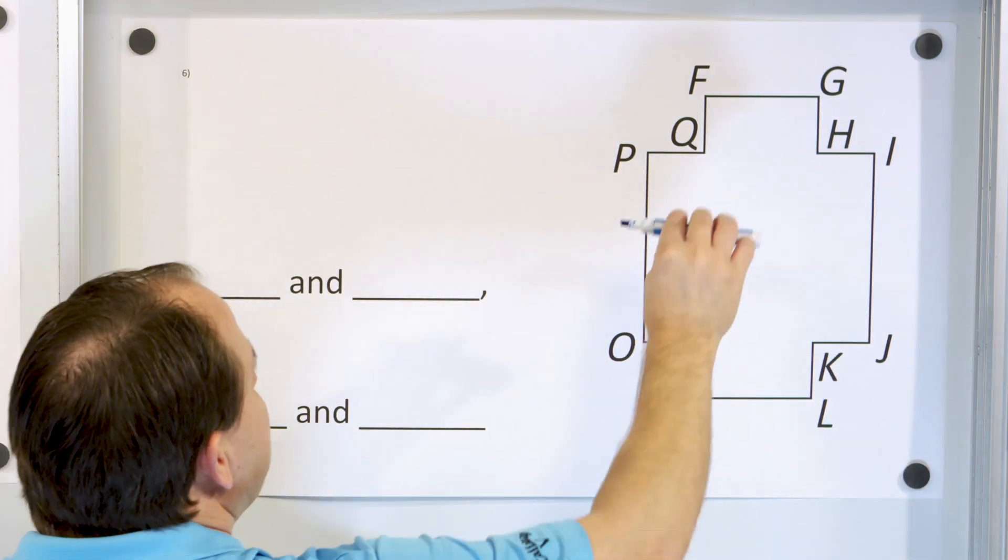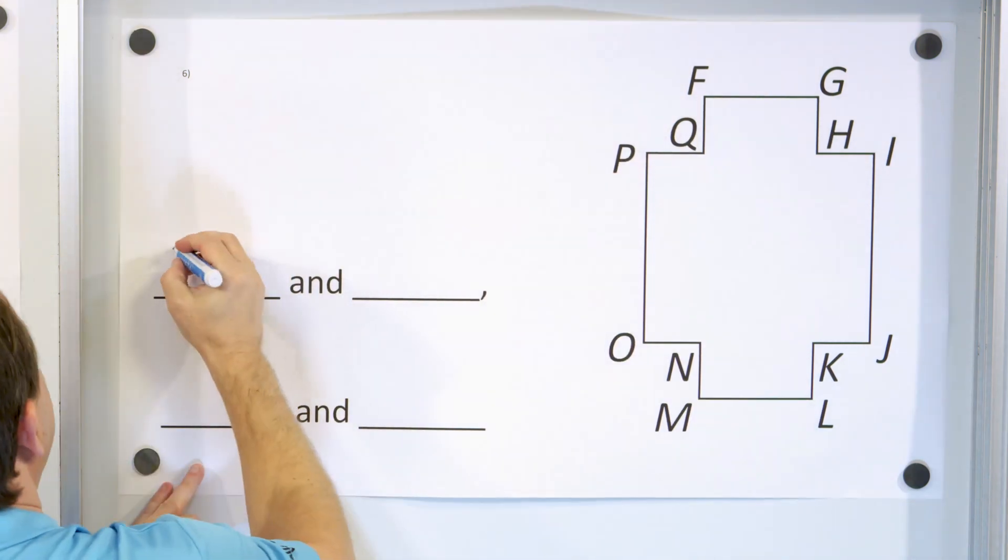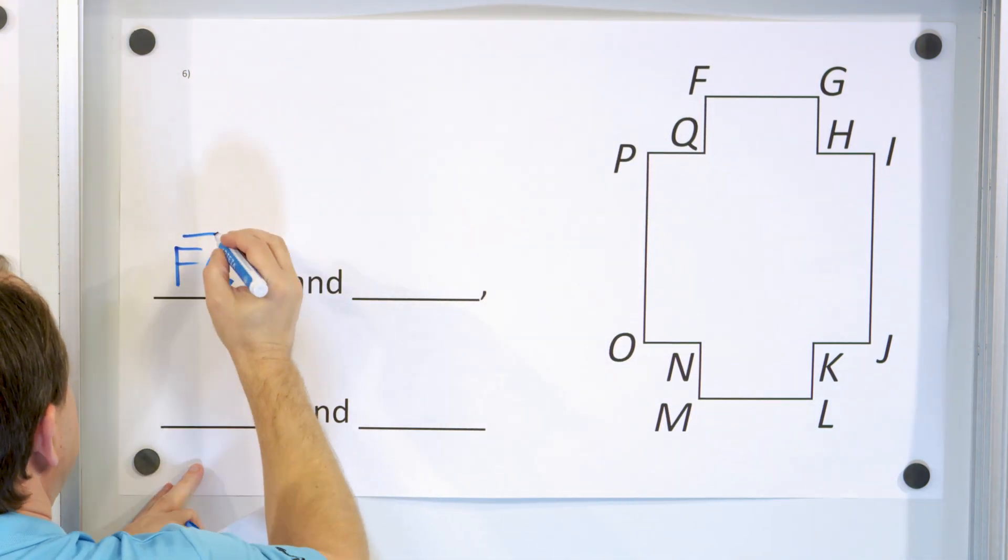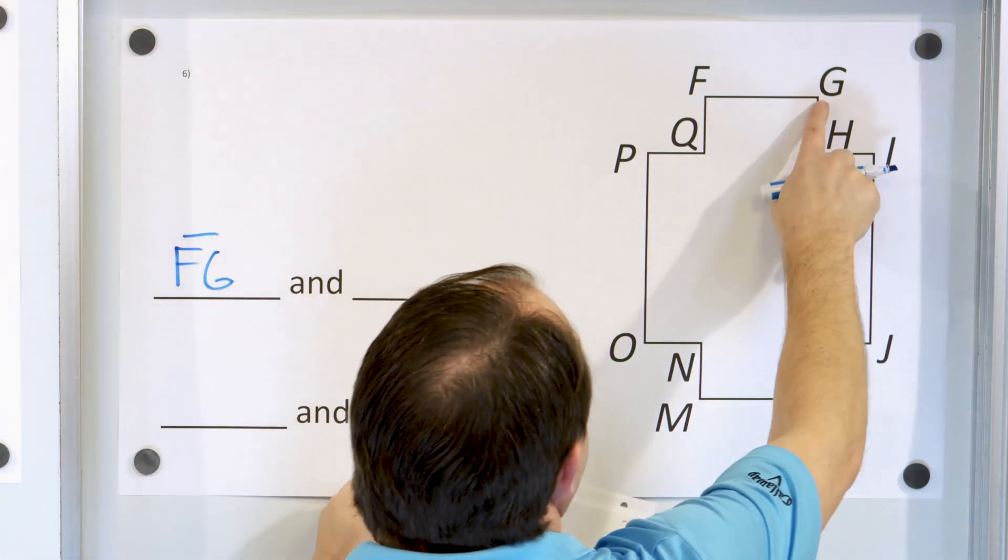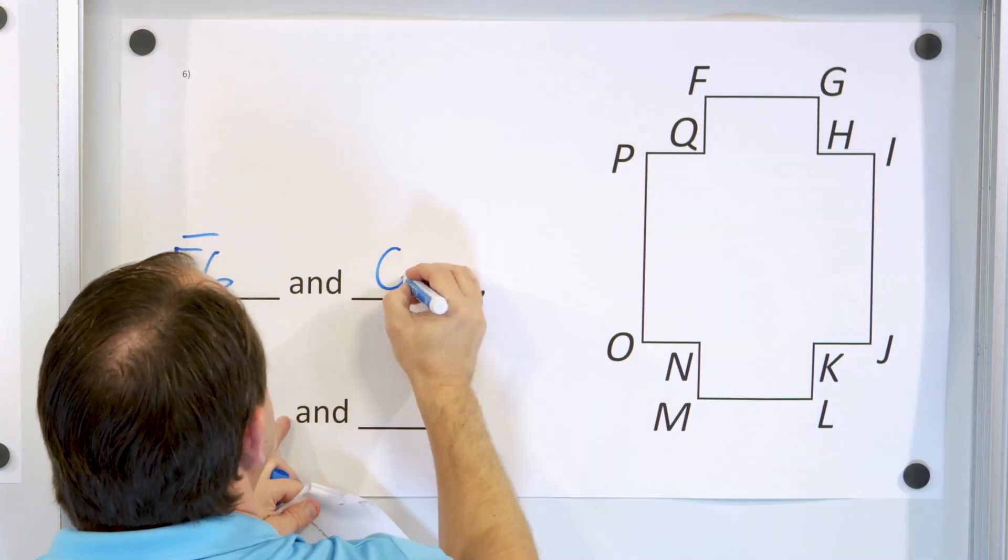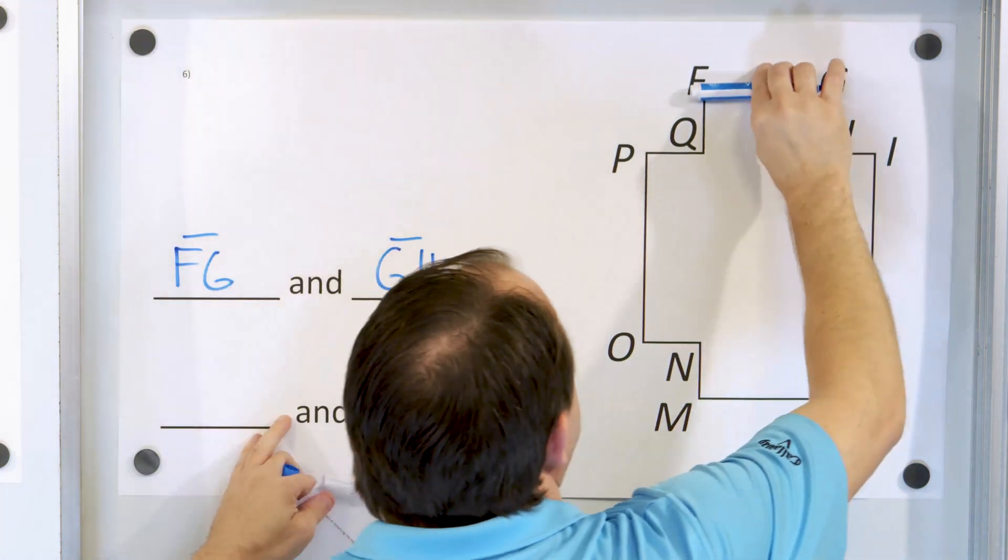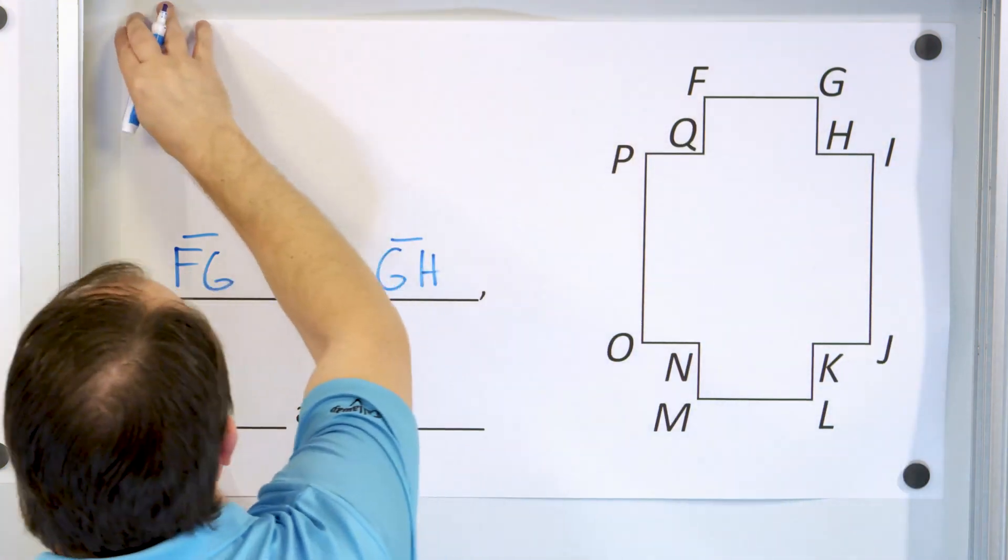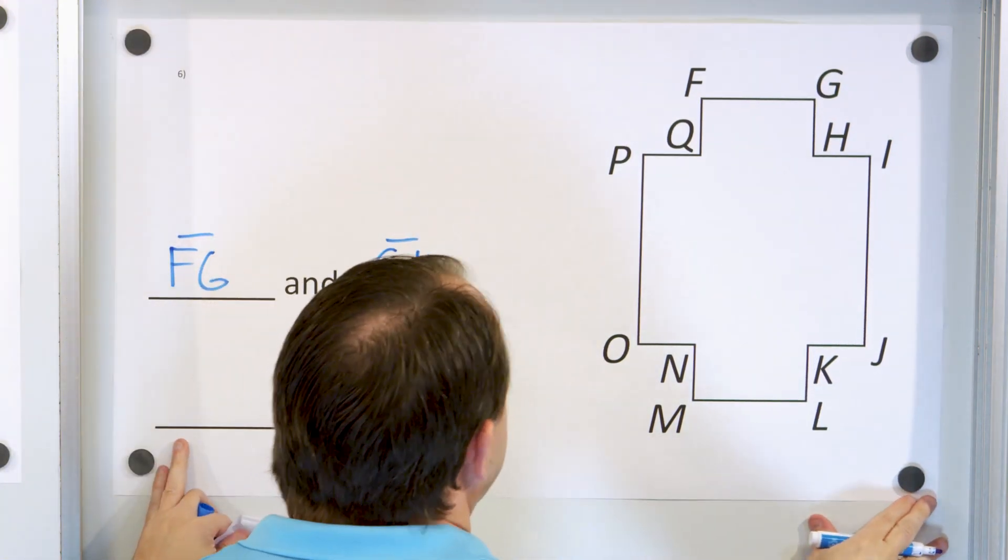So we know that this one, FG, that segment FG intersects with this one right here, GH. So FG intersects with GH. That's one answer.